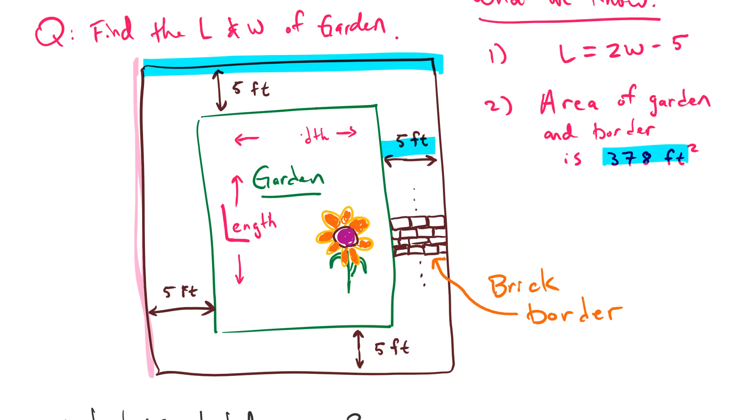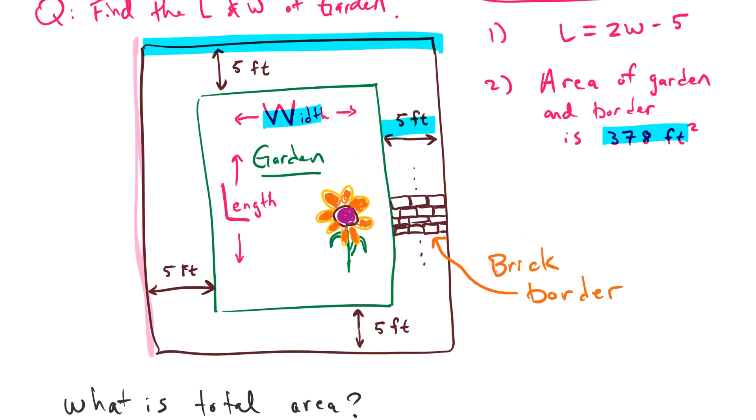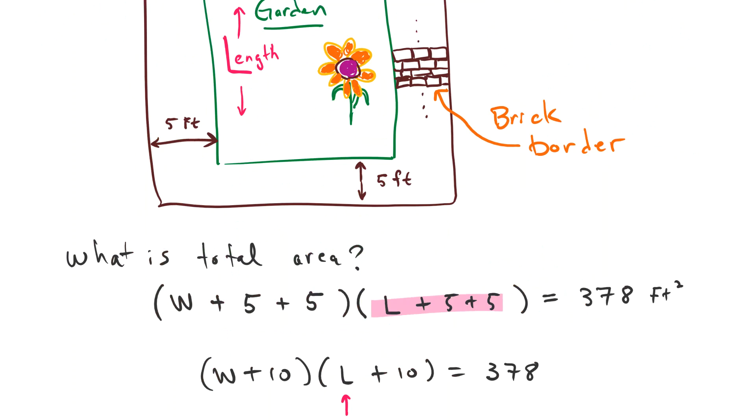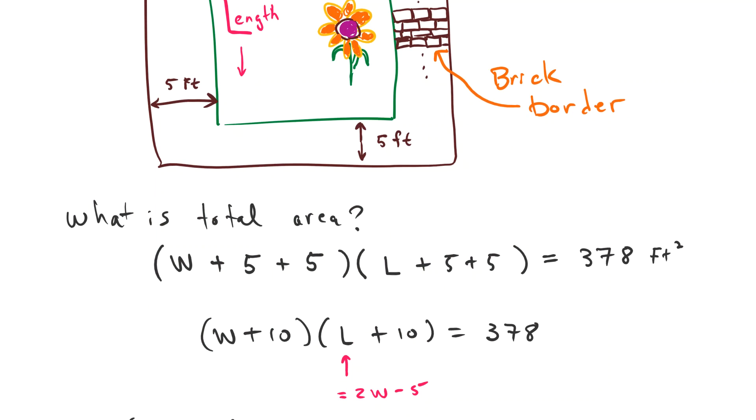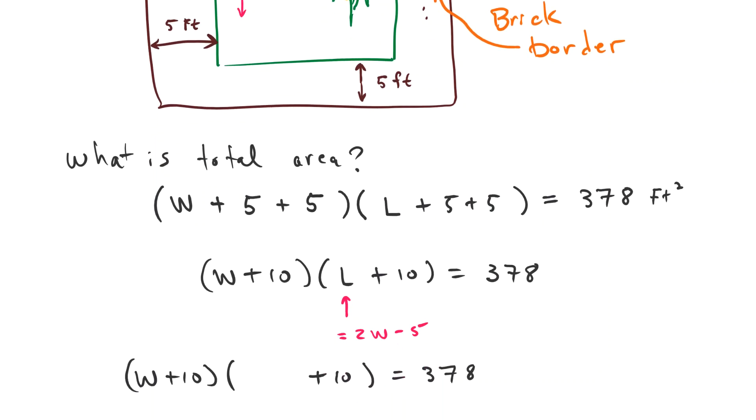We're going to times the top blue here and the pink. So the pink area is the length here—you can see the length of the flower garden plus 5 on each side—so that gives us the length plus 10. So we have our total area then of the flower garden plus the brick is width plus 10 times length plus 10, and that has to equal 378 feet squared.